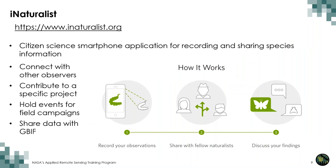iNaturalist is a popular smartphone application that has led to a surge in contributed observations and now accounts for a large percentage of new species occurrence observations. As a citizen scientist, you can connect with other observers, contribute to a specific scientific project, and even hold field campaigns. The observations are vetted for quality by experts.